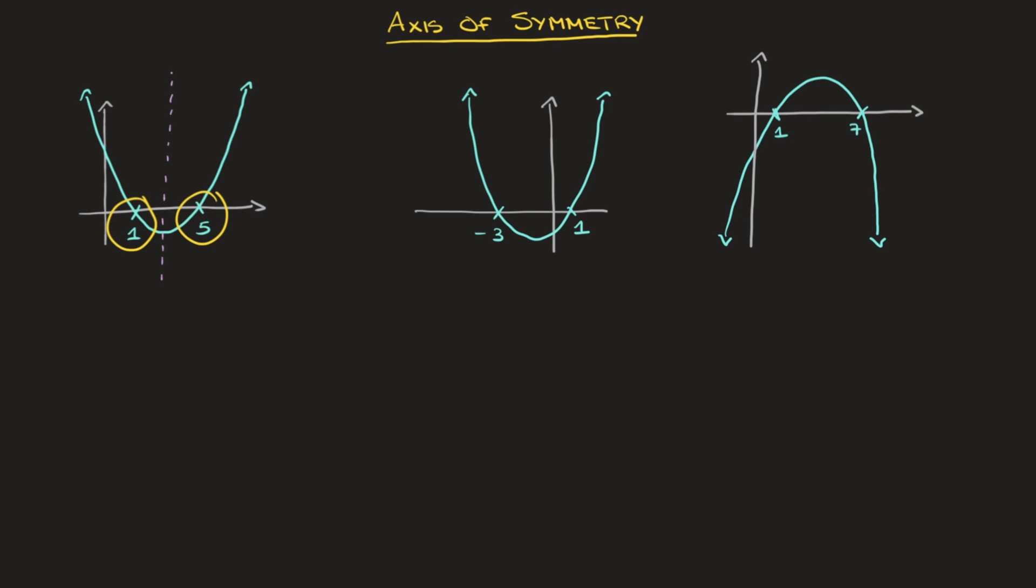The equation of this axis of symmetry is x equals the average of the two x-values at which the curve crosses the x-axis. In other words, it's equal to (1 + 5)/2, which equals 6/2. Finally, this parabola's axis of symmetry has equation x = 3. I can label that x = 3.